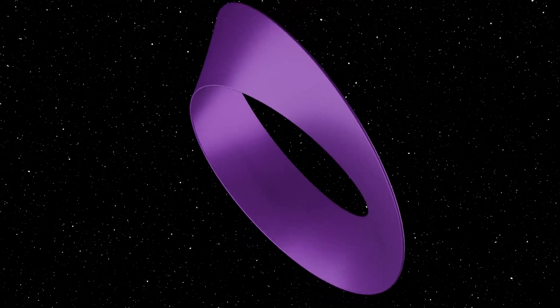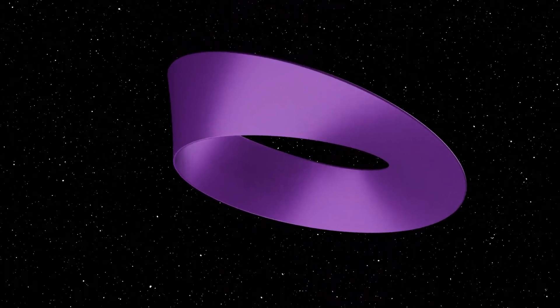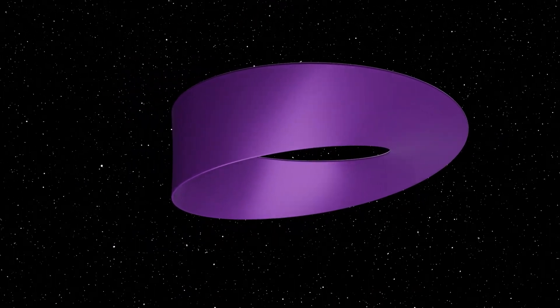But where does the Mobius strip come from as a mathematical object? Why does it only have one side? And maybe more importantly, how is any of this math?